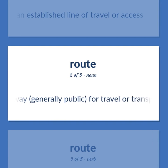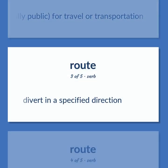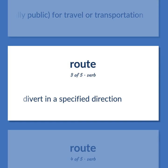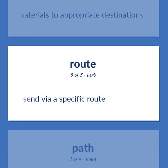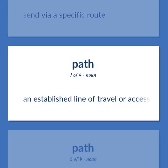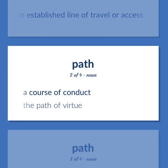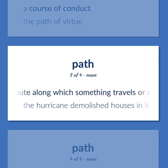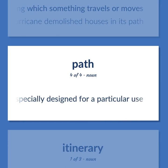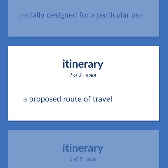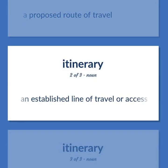Route and Path: An open way, generally public, for travel or transportation. To divert in a specified direction. To send documents or materials to appropriate destinations. To send via a specific route. An established line of travel or access. A course of conduct — the path of virtue. A line or route along which something travels or moves — the hurricane demolished houses in its path. A way especially designed for a particular use. A proposed route of travel. An established line of travel or access.